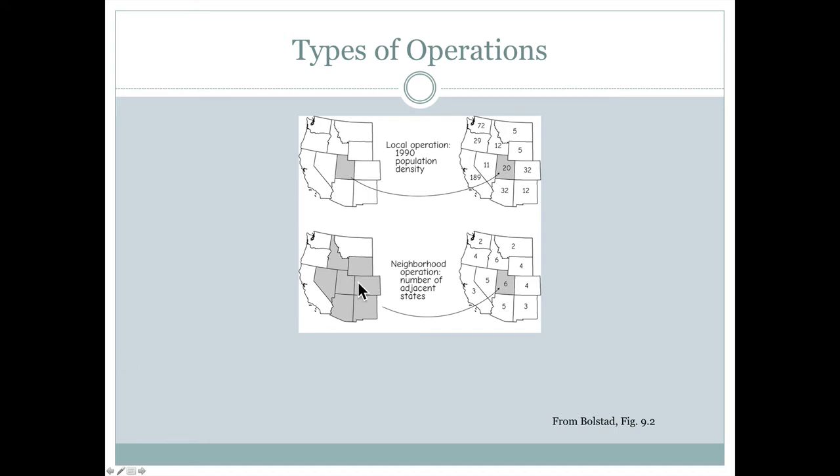In the example of Utah, it would have six different adjacent states, so it gets a value of six. Nevada has five adjacent states, so it gets a value of five. Oregon has four adjacent states, so it gets a value of four, and so on.